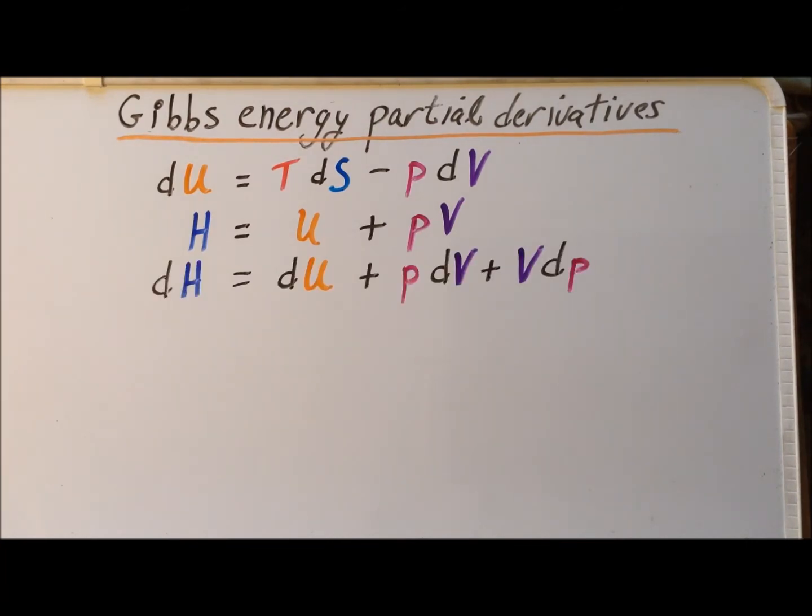Next, we calculate the differential of the enthalpy by taking differentials of each of the terms here. So on the left-hand side, the differential is simply dH. And then to take the differential of a sum, the differential operator is a linear operator, just like the derivative. So it is going to be the differential of U plus the differential of this product PV.